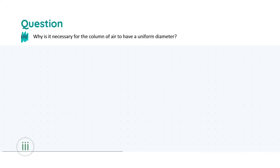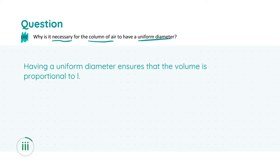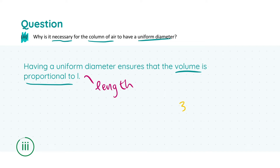Moving on to part iii, we're asked why it is necessary for the column of air to have a uniform diameter. The answer is that a uniform diameter ensures that volume is proportional to length, L. If the diameter were different in different places, we wouldn't be able to show that volume is inversely proportional to pressure, and we wouldn't be able to prove Boyle's law. For this you would get three marks — the key takeaway is that it ensures volume is proportional to length.